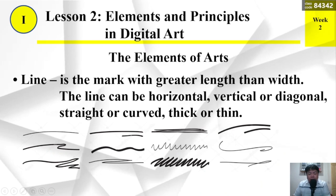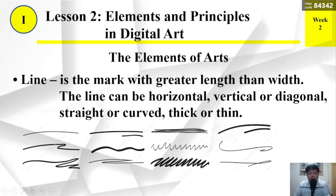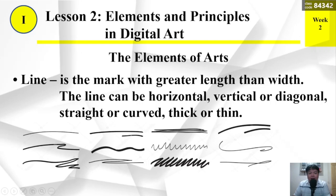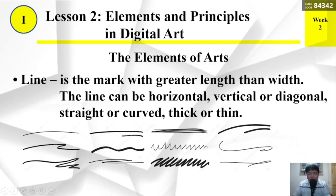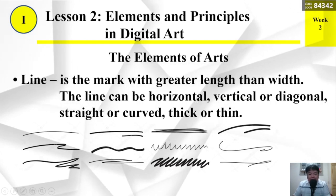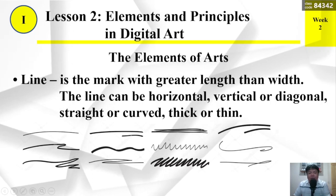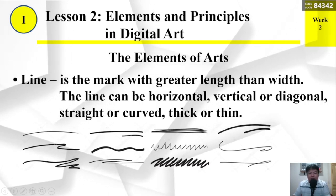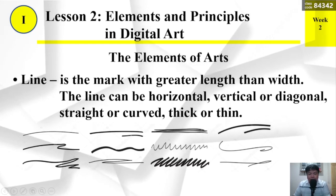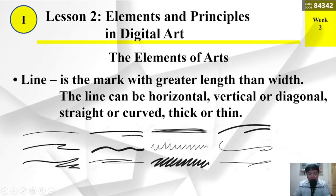The Elements of Arts. Line is the mark with greater length than width. The line can be horizontal, vertical or diagonal, straight or curved, thick or thin.